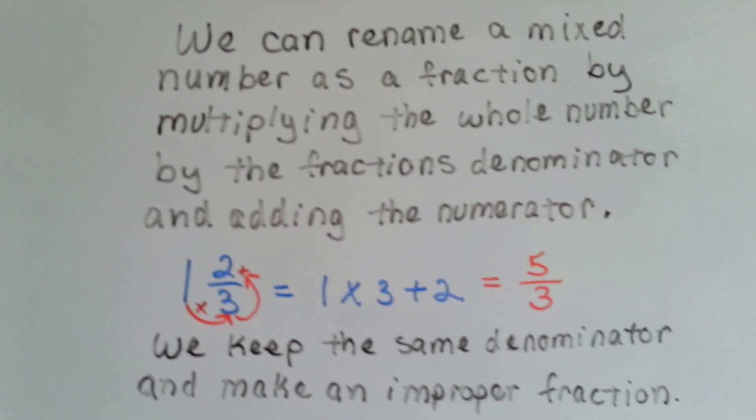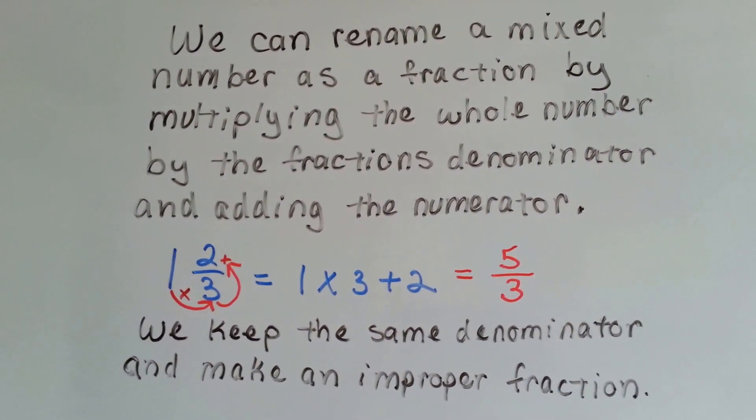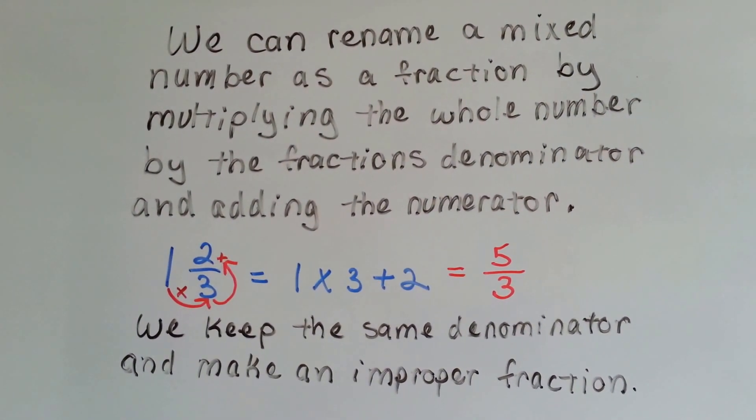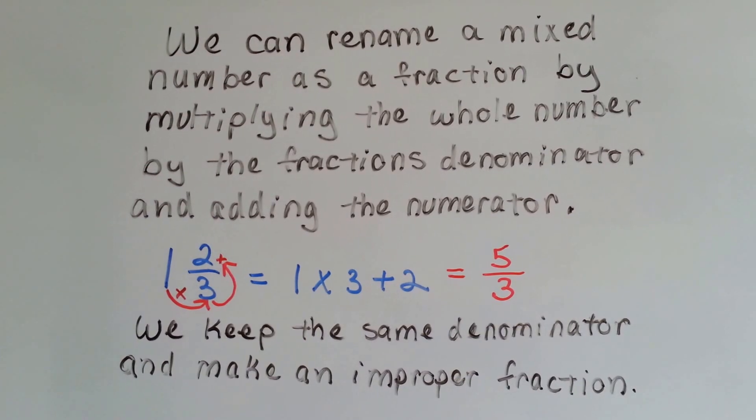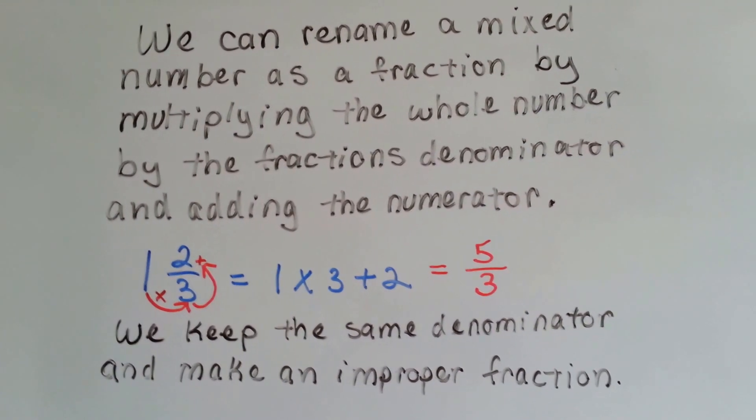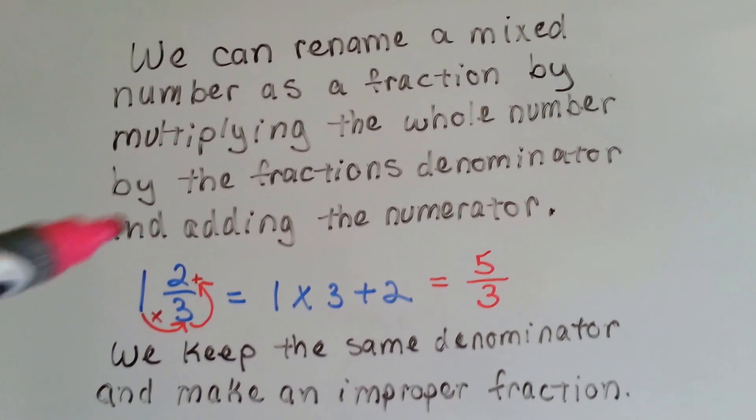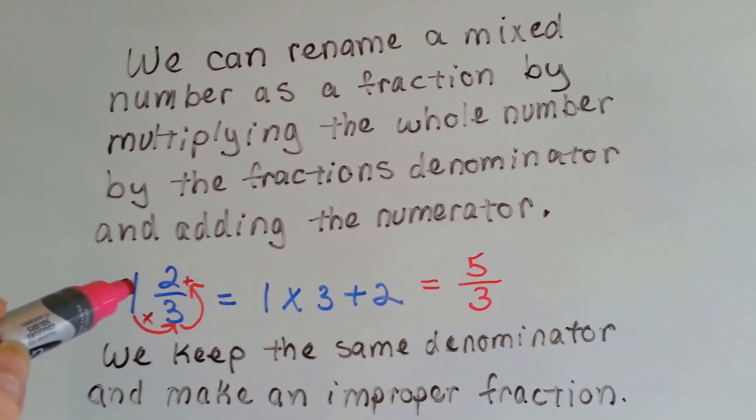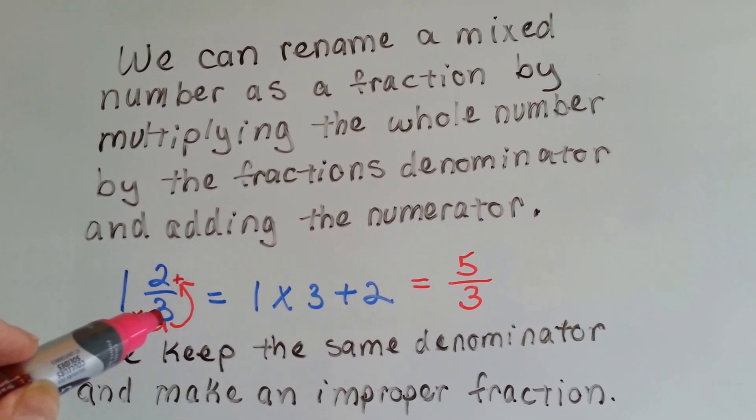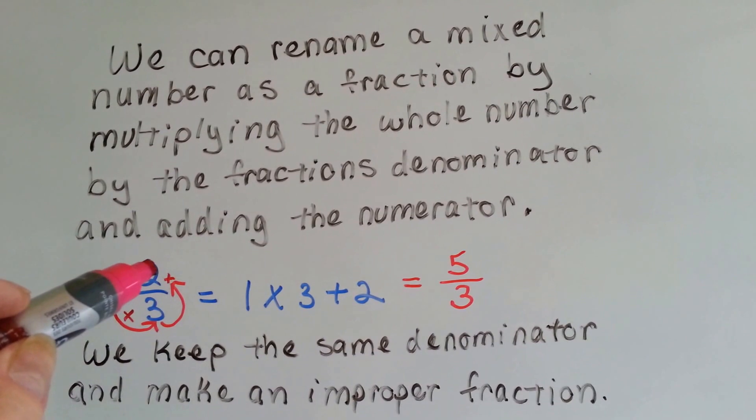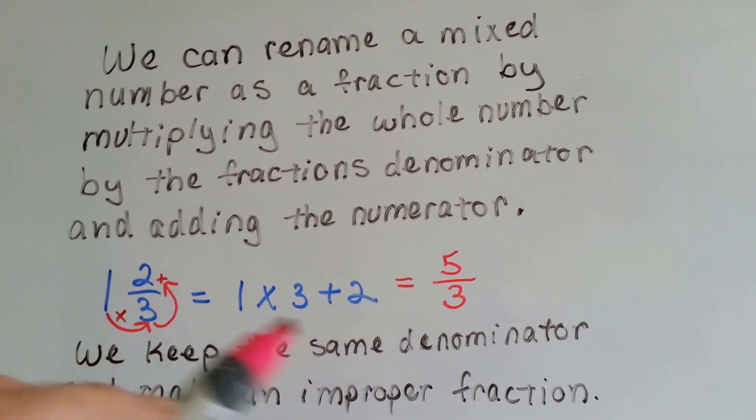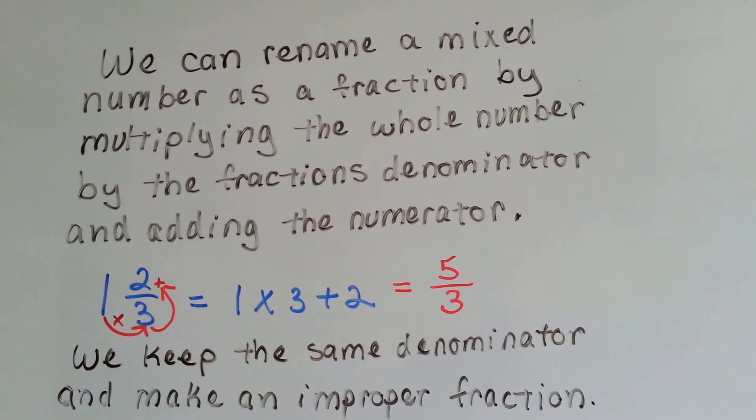We can rename a mixed number as a fraction by multiplying the whole number by the fraction's denominator and adding the numerator. Do you remember that from fourth grade? If we have 1 and 2 thirds, we multiply 1 times 3, which is 3, and we add the 2, which is 5. We keep the denominator so we have 5 thirds.